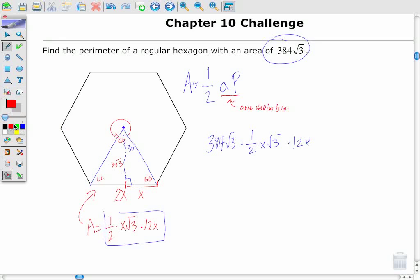Let's simplify this left side. I've got 1 half times 12, which is 6, so 384 times the square root of 3 is equal to 6x times x is x squared, 6x squared times the square root of 3.